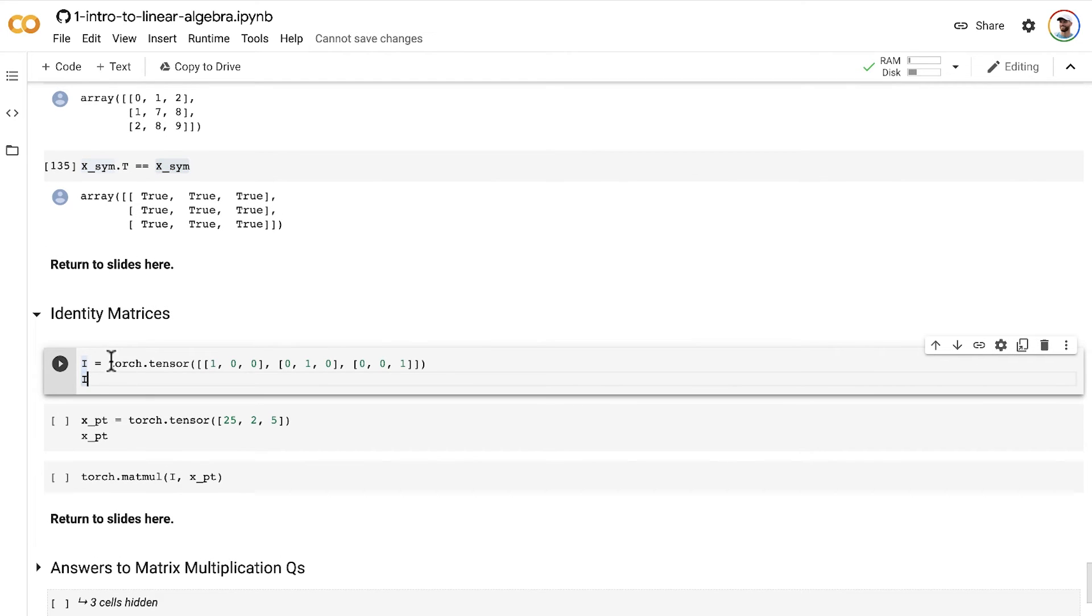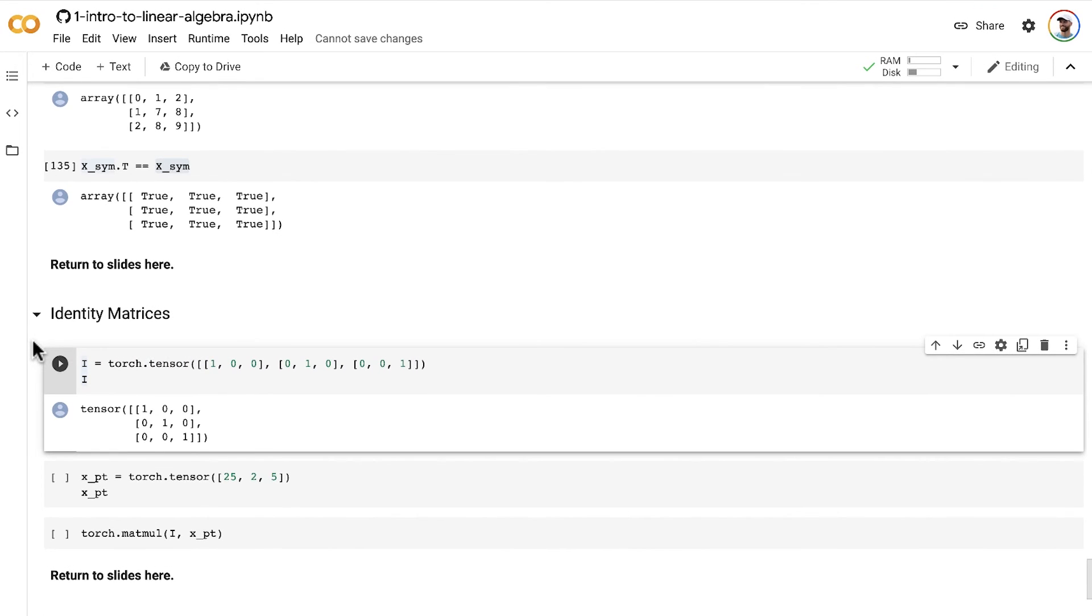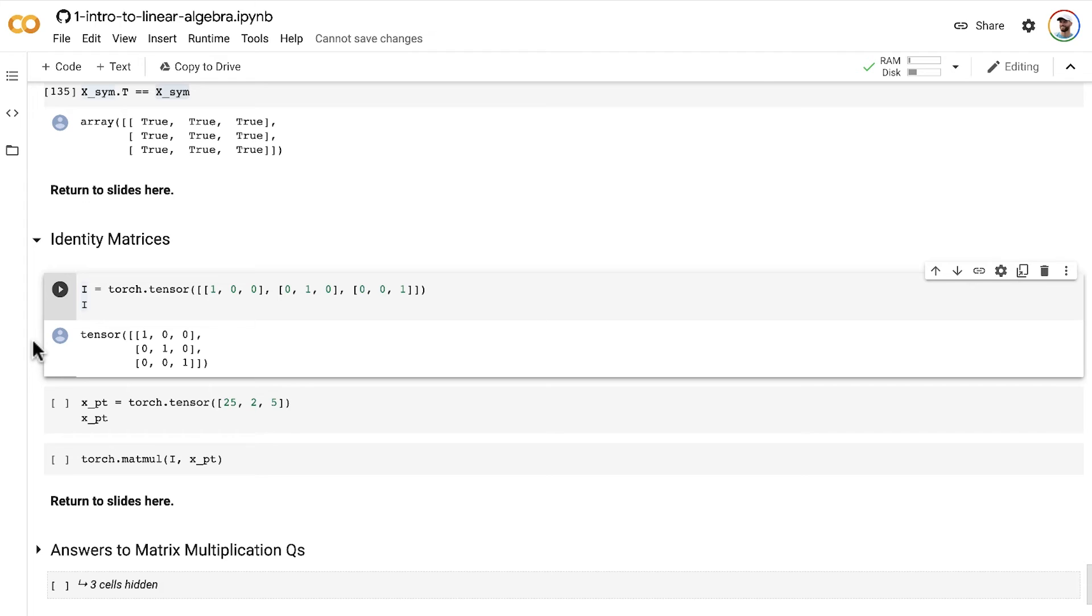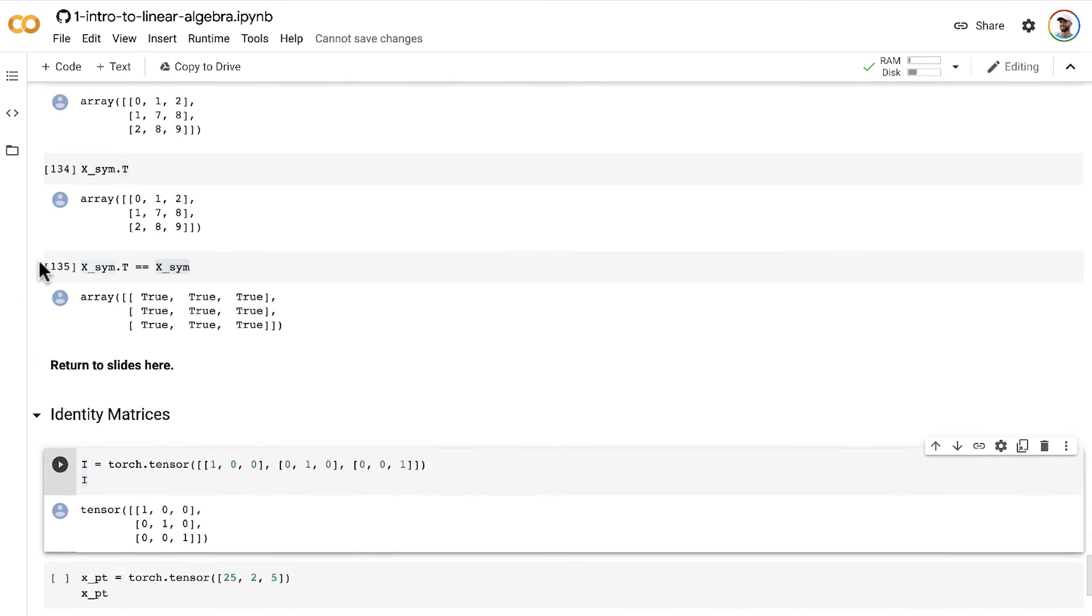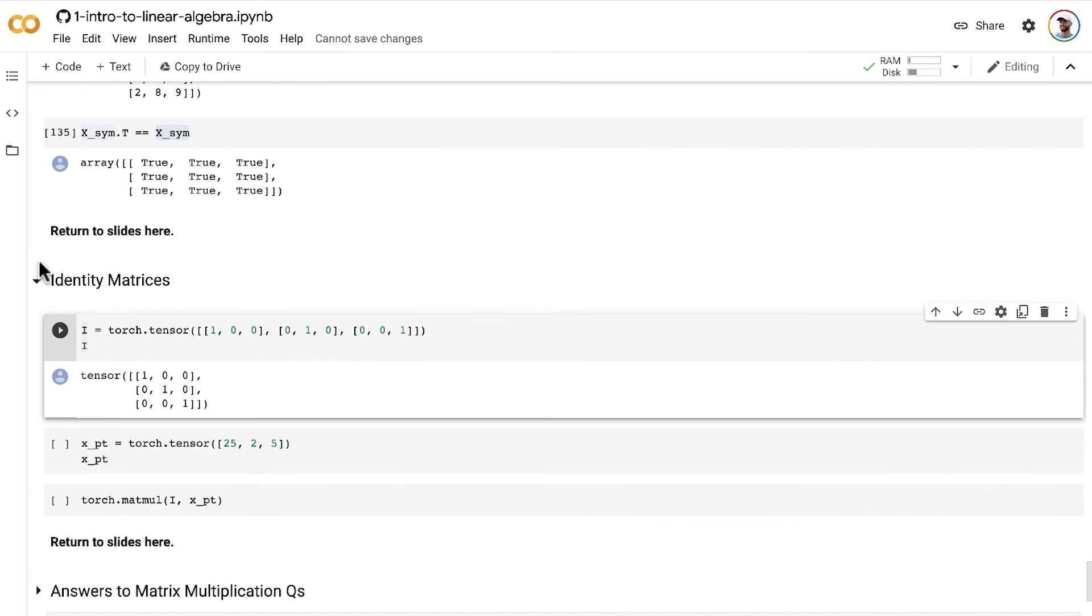So here I'm using PyTorch to create an identity matrix. We could have done all these examples in NumPy, PyTorch, and TensorFlow, like many examples in this notebook. But by this point, if you've been following along with all the videos, you should be comfortable doing any of these exercises in NumPy, PyTorch or TensorFlow.